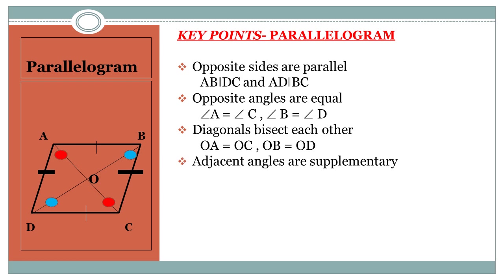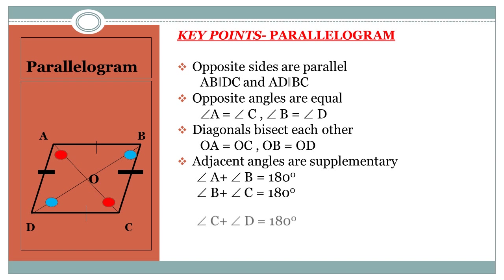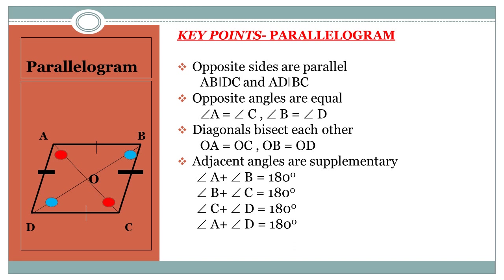Fourth property: adjacent angles are supplementary, meaning their sum equals 180 degrees. So angle A + B = 180°, angle B + C = 180°, angle C + D = 180°, and angle A + D = 180°. These are the main properties of a parallelogram.